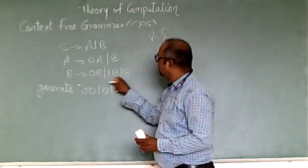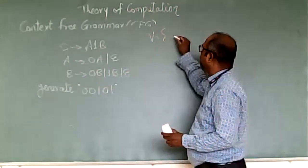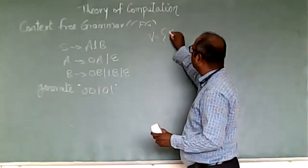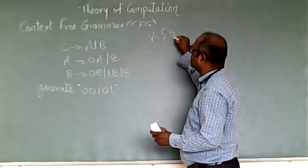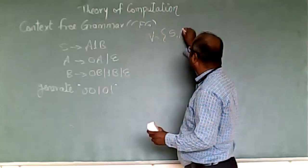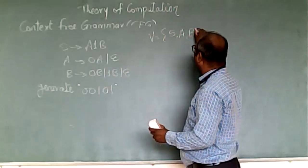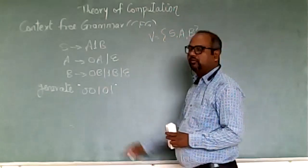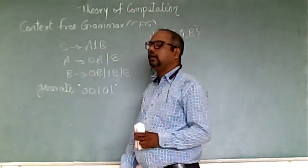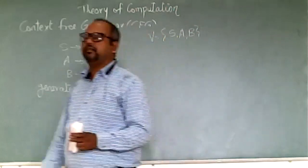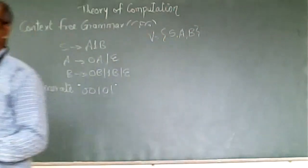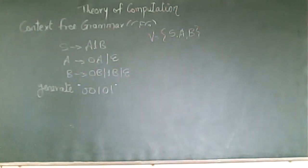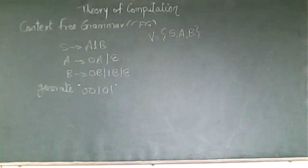So we have three variables: S, A, and B. Variables always appear on the left hand side.